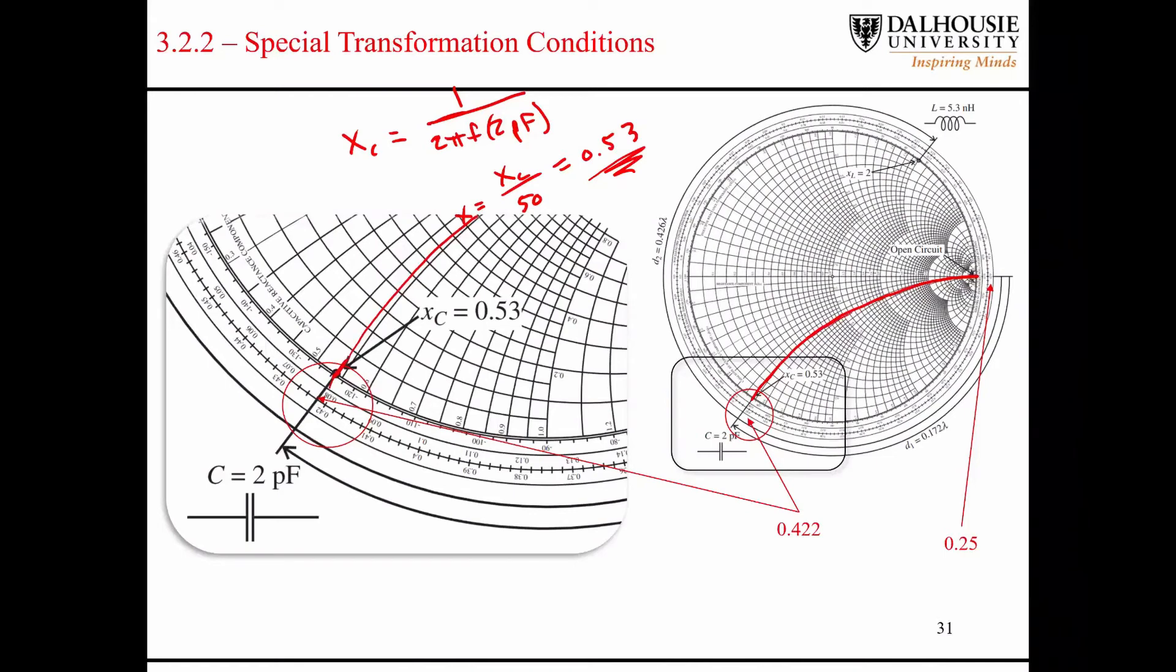We're going from an open circuit to that impedance. So we're going from an open circuit impedance where the impedance is essentially infinite, and we are rotating towards the generator to where the impedance corresponds to this value of 0.53, which corresponds to the 2 picofarad capacitor in this case. So we want to start off here at 0.25, rotate clockwise towards the generator to that line of constant reactance, the line of 0.53, and then the angle of rotation would be at this side at 0.25, and at this side here it's 0.422.